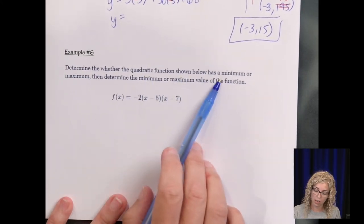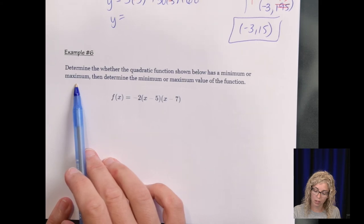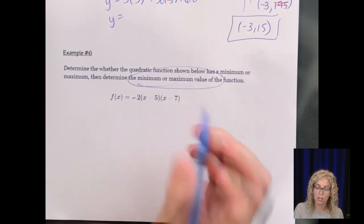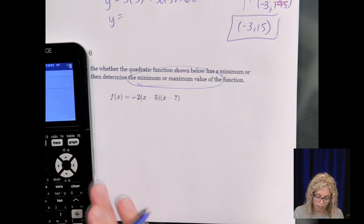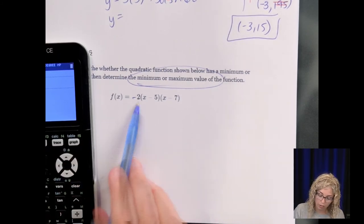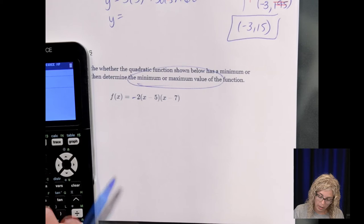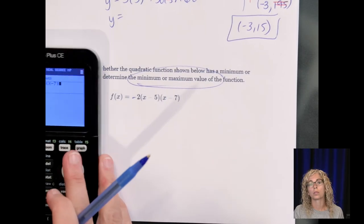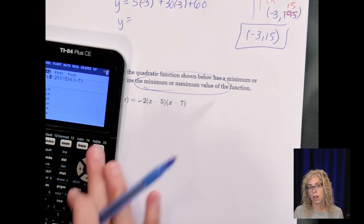All right, so determine where the quadratic function shows below has a minimum or maximum value. Then state that maximum value. So a couple things. Type it into the calculator. Give yourself that visual. But if there's a negative out in front, that should tell you something right away. And if it's opening right side up or upside down. So have it in your head which way before I hit graph.